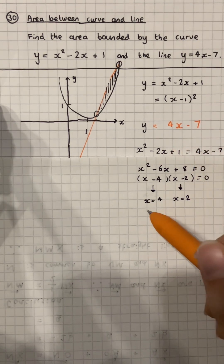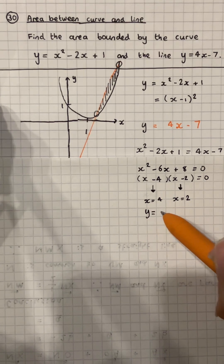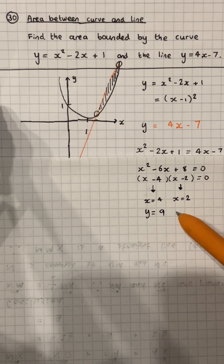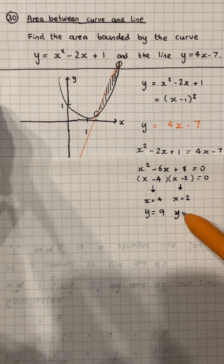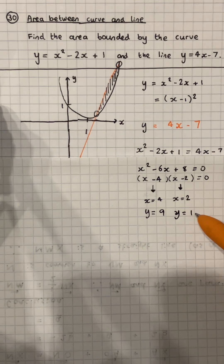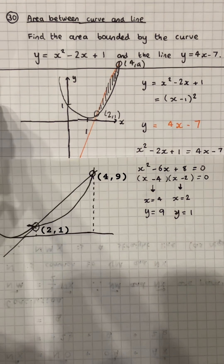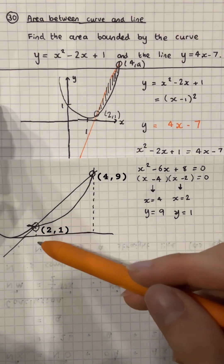If we put those x values back into y, we get y equals 4 times 4 minus 7, which is 9, or 4 times 2 minus 7, which is 1. That gives us the two points on the graph.